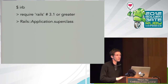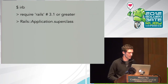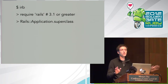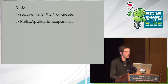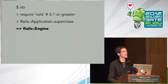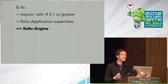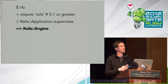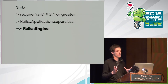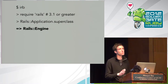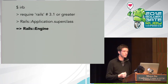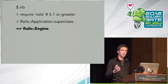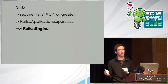Everyone who stood for the first question should have stayed standing for the second. You can verify this in your terminal: every Rails application is a Rails engine. The superclass of the Rails application class is Rails::Engine. A Rails application is basically just a bootable Rails engine — it's a Rails engine that knows how to start itself up.